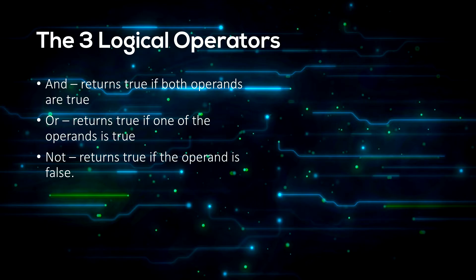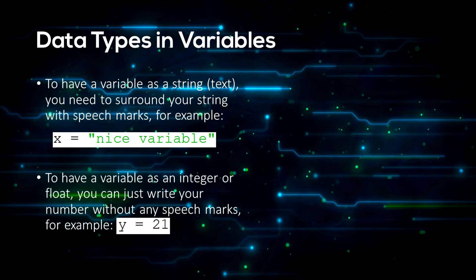That's all the operators. Now onto data types. We have one text type, which is a string — just some text, shown by being surrounded by speech marks or quote marks. We have two numeric types: integers and floating point numbers. Integers are just whole numbers, and floating point numbers are numbers that contain decimals.